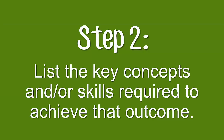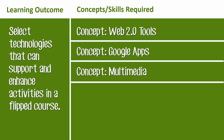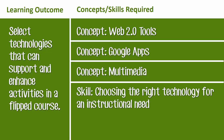Step 2: List the key concepts and/or skills required to achieve that outcome. When I look at my outcome and think about what's involved, they first need to know about the technologies that can support and enhance before they even talk about selecting which ones. So one concept is Web 2.0 tools, another concept is Google Apps, and another will be multimedia. The skill is choosing the right technology for an instructional need.